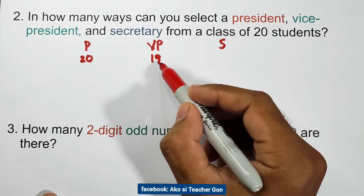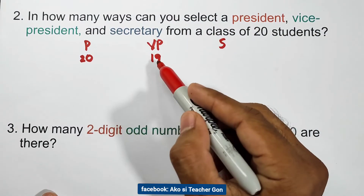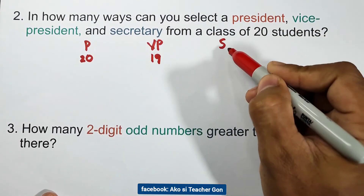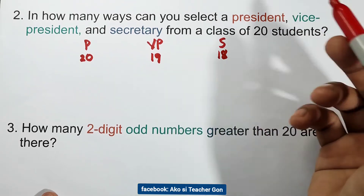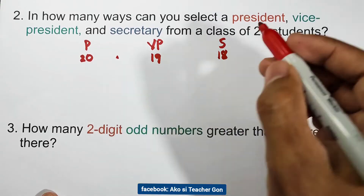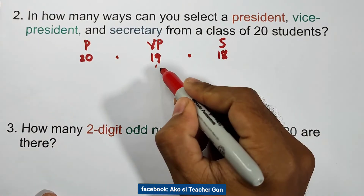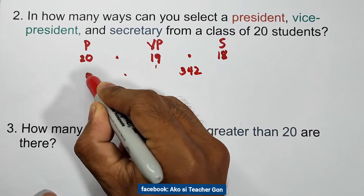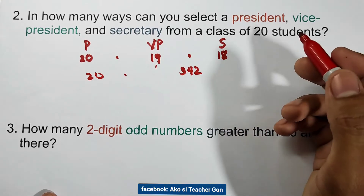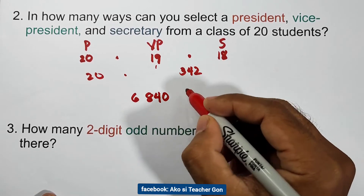Since a president and vice president have been elected, we only have 18 possible choices for the secretary. Using the fundamental counting principle, we multiply 20 times 19 times 18. 19 times 18 equals 342, and 342 times 20 equals 6,840 ways.